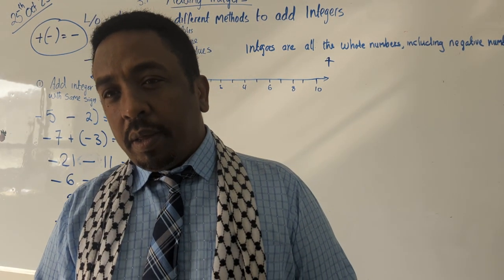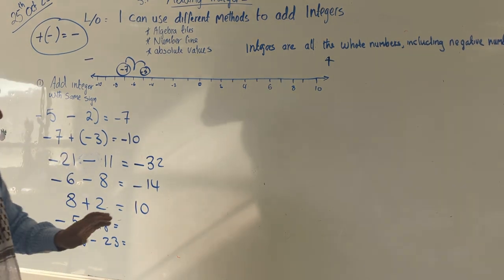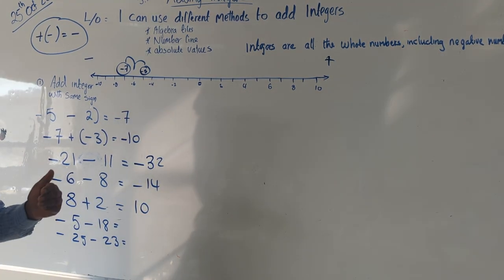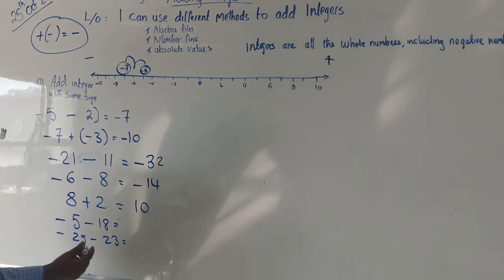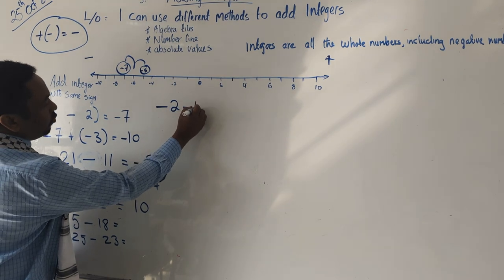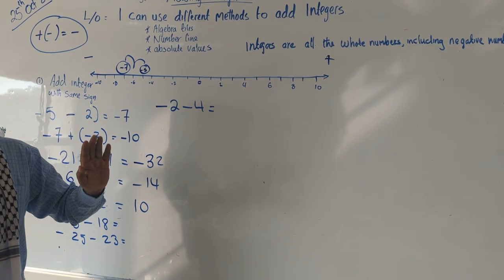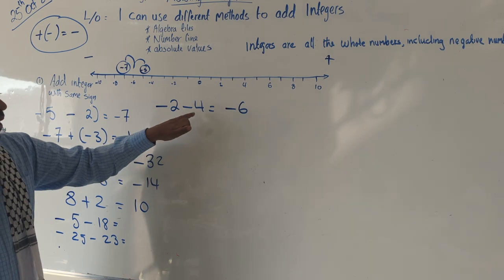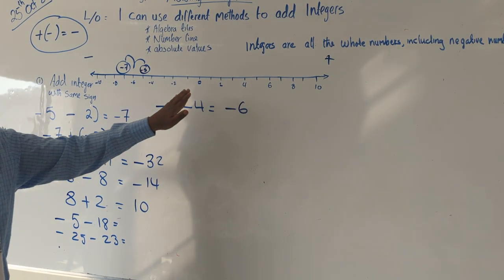Good question — why are we adding them? Let's say I have minus 2 minus 4. In your head, it should give you minus 6, because 2 plus 4 is 6, and both are minus so the answer is minus. We need a proof of that — let's use the number line. We start at negative 2, and because we are subtracting another 4 we move in the negative direction, counting four steps: 1, 2, 3, 4. We end up at negative 6.